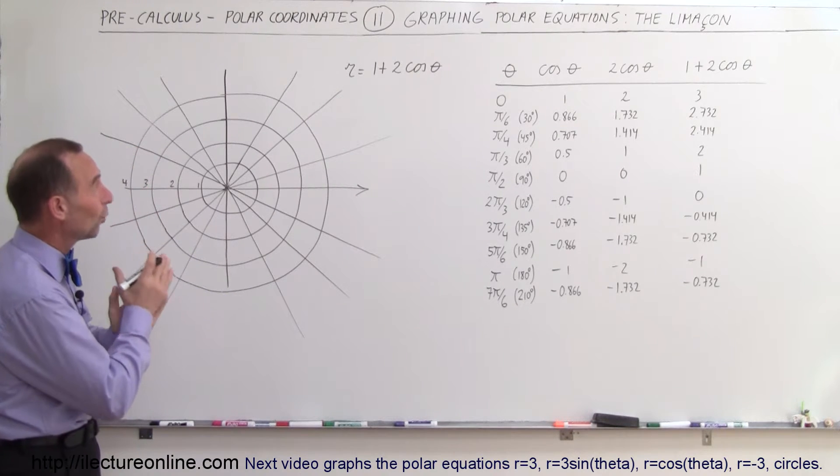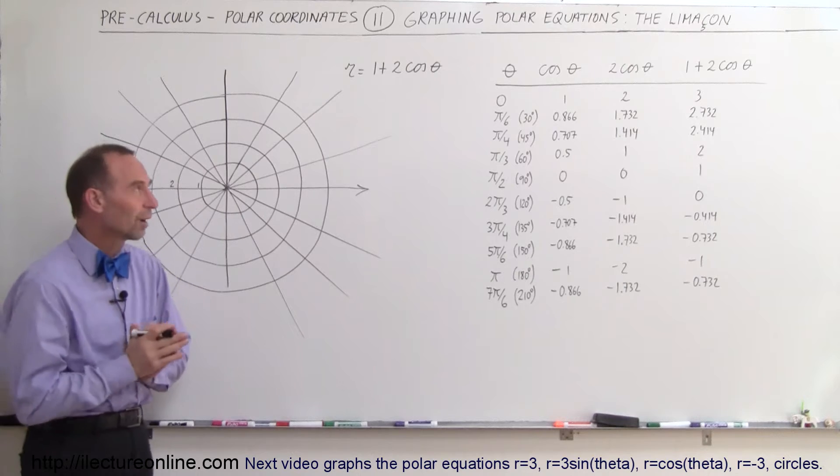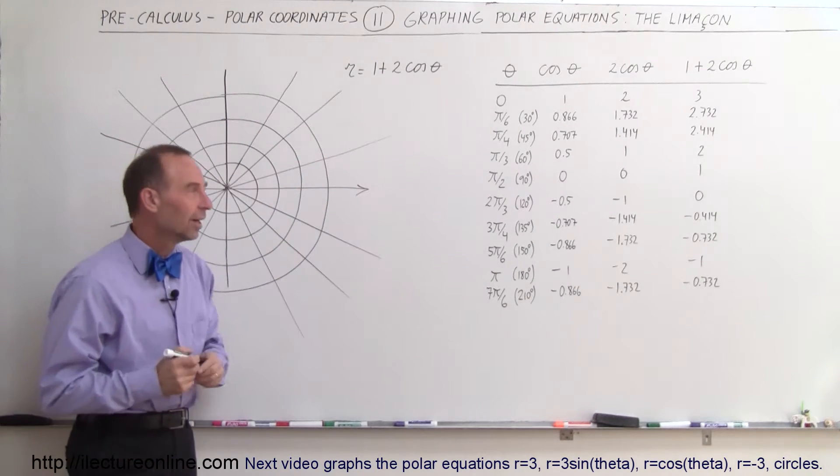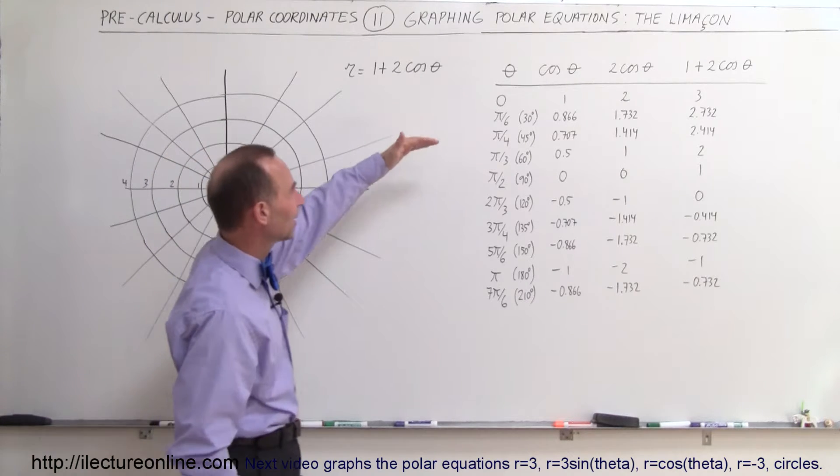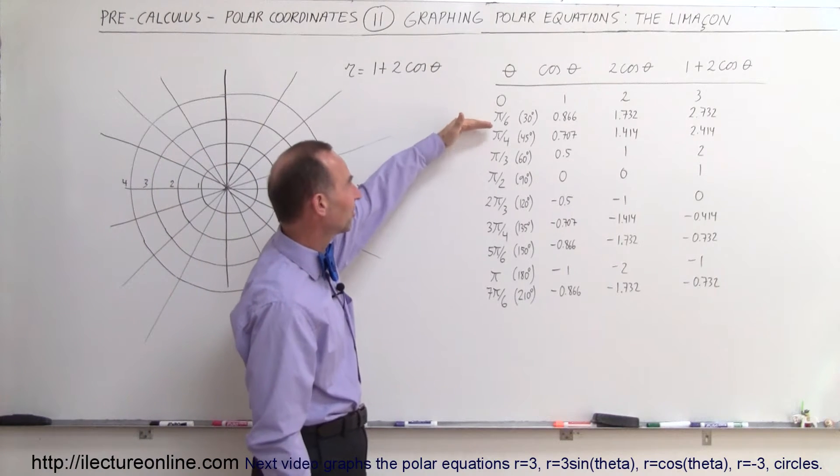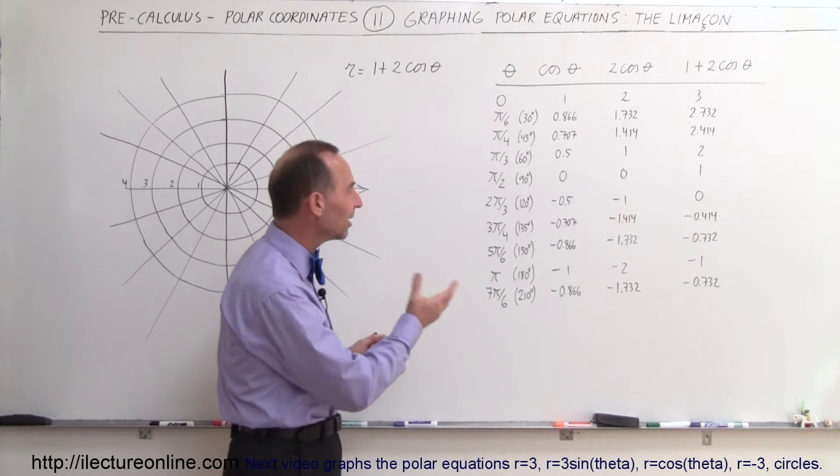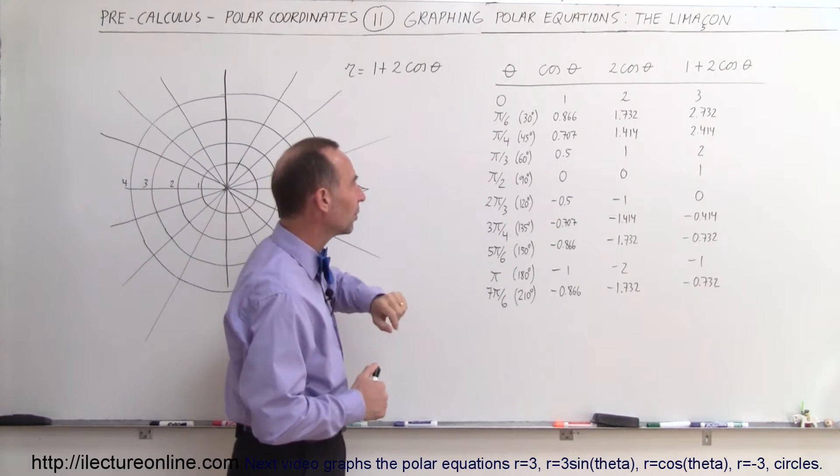Now, r equals 1 plus 2 times the cosine of theta. That's the equation we're going to try and draw. Let's see what that looks like. And to help us, we already have some numbers here ready for us. We're going to try different angles starting at 0, pi over 6, pi over 4, pi over 3. I also put the degree next to that so we can see what that is equal to in a number of degrees.